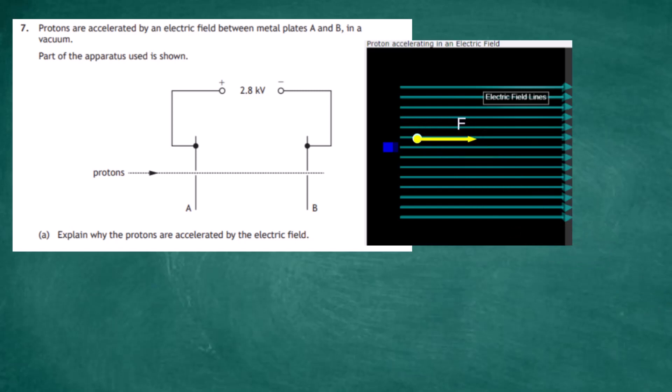Any charged particle in an electric field will experience a force, and if it's a positively charged particle it will experience a force and thus an acceleration in the direction of the field lines. A proton is a positive charge, so it will experience a force from left to right and therefore accelerate from A to B. The electric field does work on the positive charge and accelerates it through the electric field.